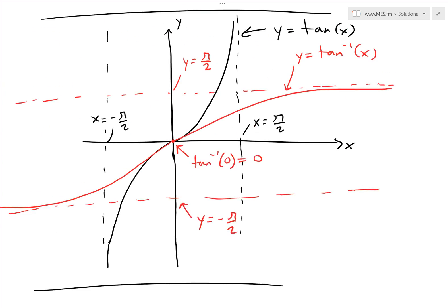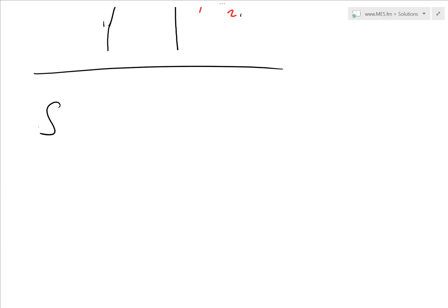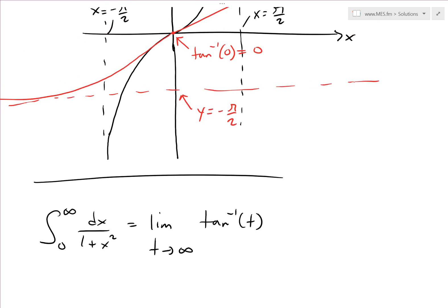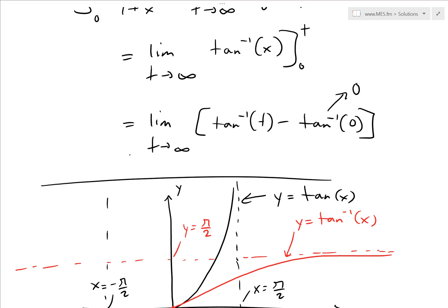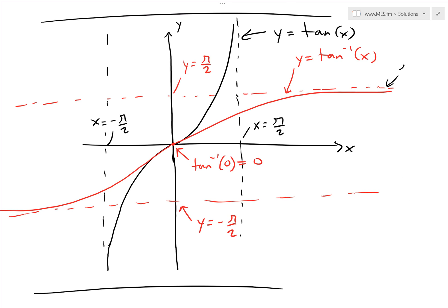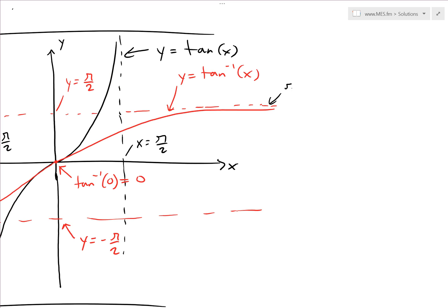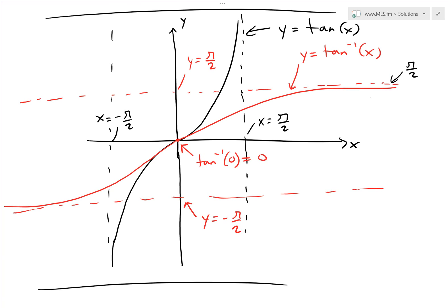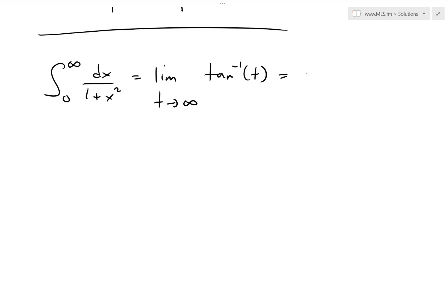Putting this together, the integral from zero to infinity of 1 over 1 plus x squared dx equals the limit as t approaches infinity of inverse tan of t, since inverse tan of 0 is zero. As x goes to infinity, inverse tan approaches pi over 2, so this limit equals pi over 2.